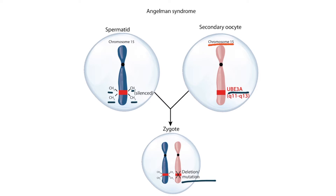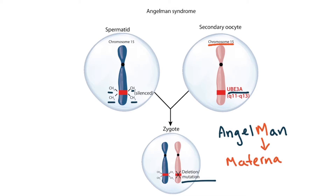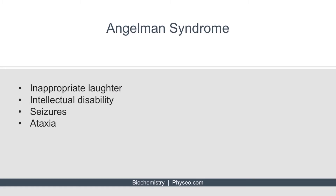Some students remember that the maternal chromosome is deleted by using the letter M in Angelman syndrome. The symptoms of Angelman syndrome include inappropriate laughter, intellectual disability, seizures, and ataxia. The most important symptom to remember is probably inappropriate laughter.